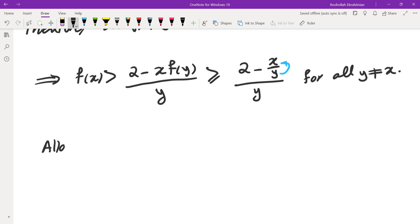What I can do is I can allow y to approach x. So allow y to approach x. Then what we get is f(x) is greater than or equal to 2 minus x over, this approaches 1, and the bottom approaches x. So that tells us f(x) is at least 1 over x.